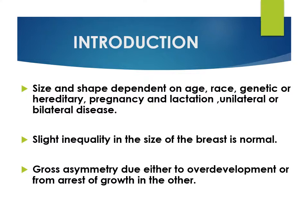The breast is also called the mammary gland — it is a large gland in the body. The size and shape of the breast depends on a person's age, race, or genetic makeup. Some families may be more prone to having larger breasts. It also depends on whether the person is pregnant or breastfeeding. The size may vary if there is disease, which can be unilateral (one breast) or bilateral (both breasts).